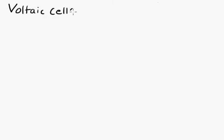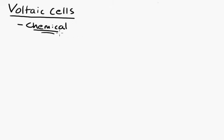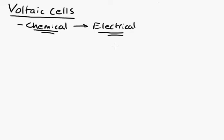What we're going to do today is talk about voltaic cells. Basically, voltaic cells take chemical energy from chemical reactions and convert that energy into electrical energy. They take chemical energy and convert it directly into electrical energy from the chemical reactions that are taking place.